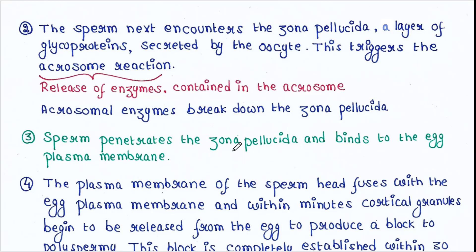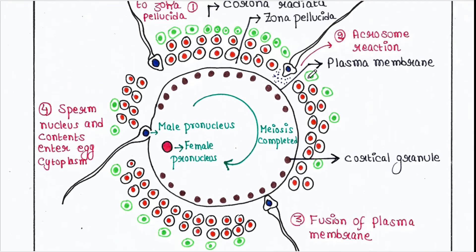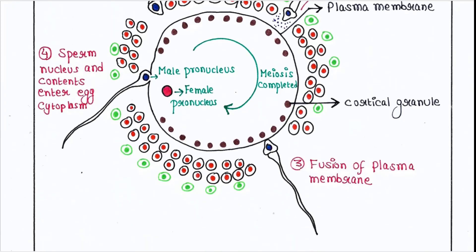Sperm penetrates the zona pellucida and binds to the egg plasma membrane. So this is the acrosome reaction and now the sperm is fused with the plasma membrane.